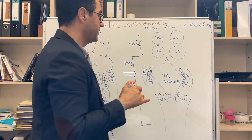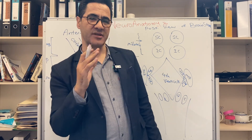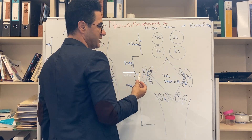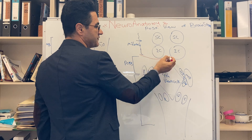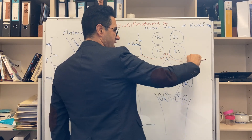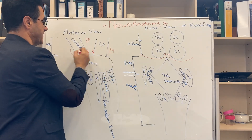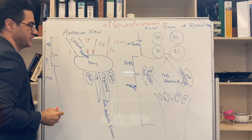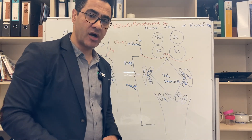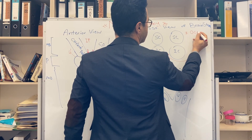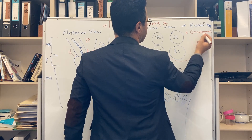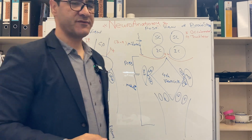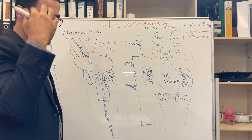Cranial nerve 4 is the only nerve coming out of the back of the midbrain. Here is the posterior view — we have superior colliculi and inferior colliculi. Immediately below the inferior colliculi, the two cranial nerve 4s come out and wrap around the cerebral peduncle. Cranial nerve 3 is the oculomotor nerve, and cranial nerve 4 is the trochlear nerve.